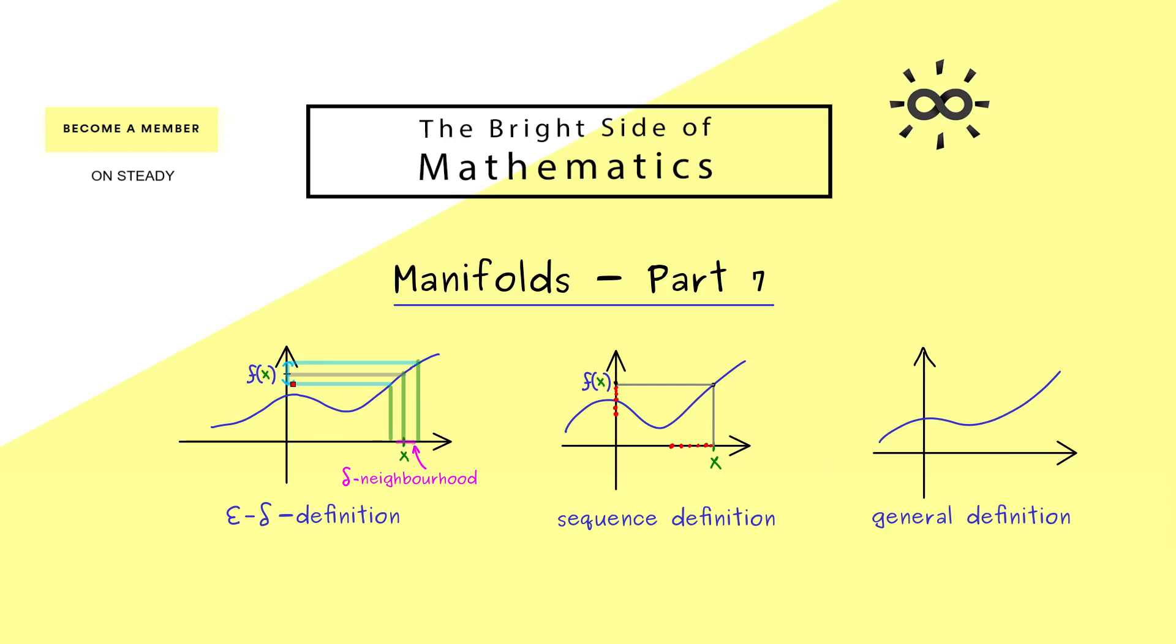Because we have open sets here on the x-axis and open sets on the y-axis. More precisely, what we want is that for any open set we can choose on the y-axis, we find that the corresponding pre-image is also open.